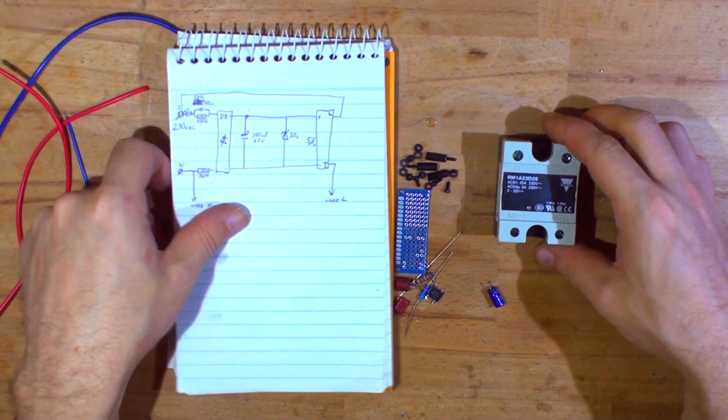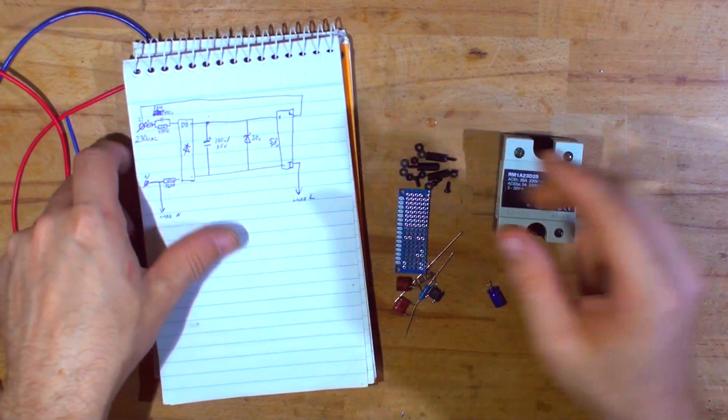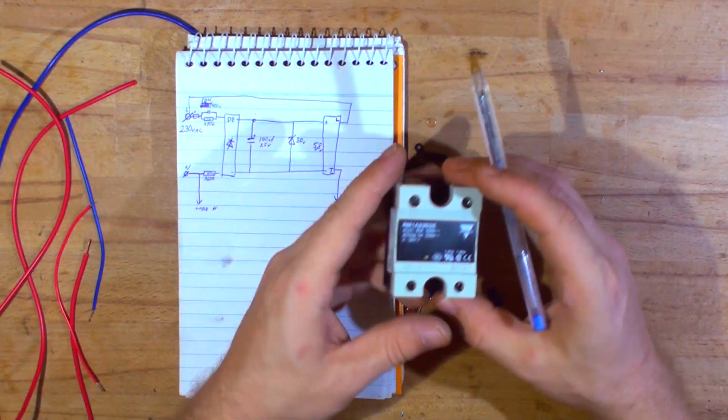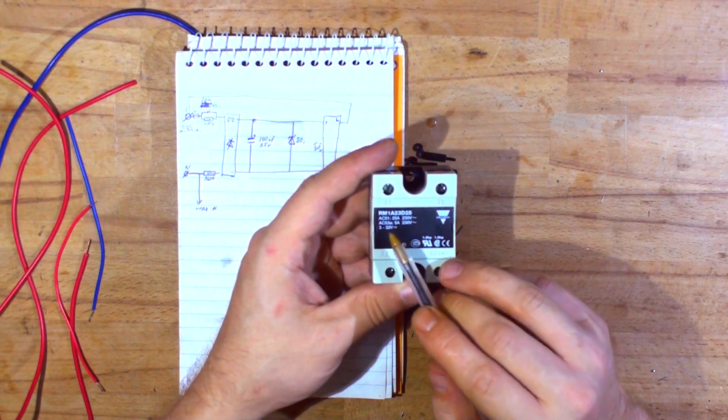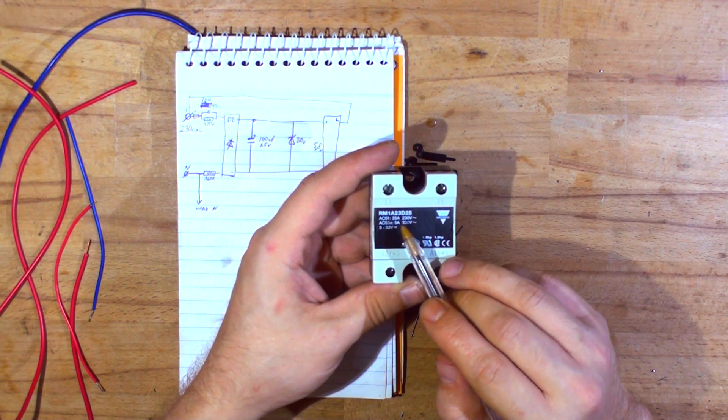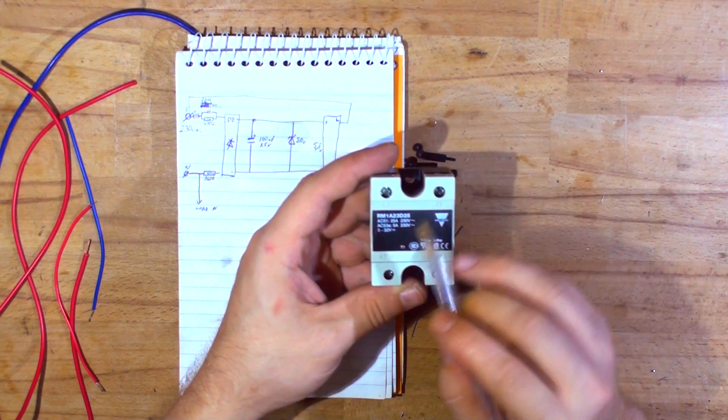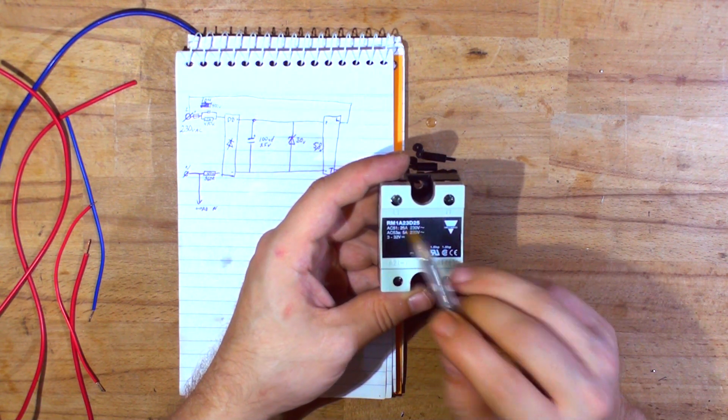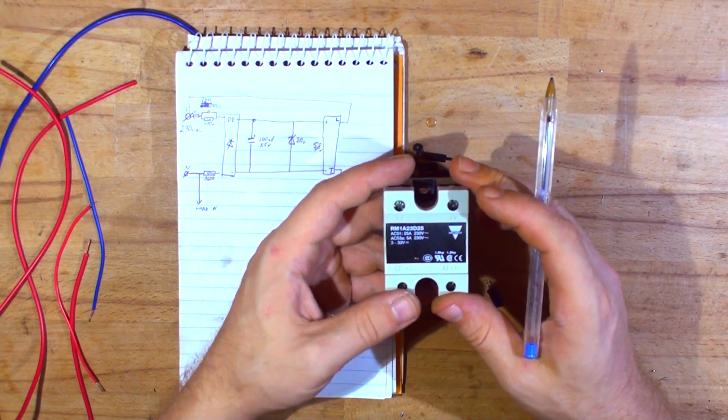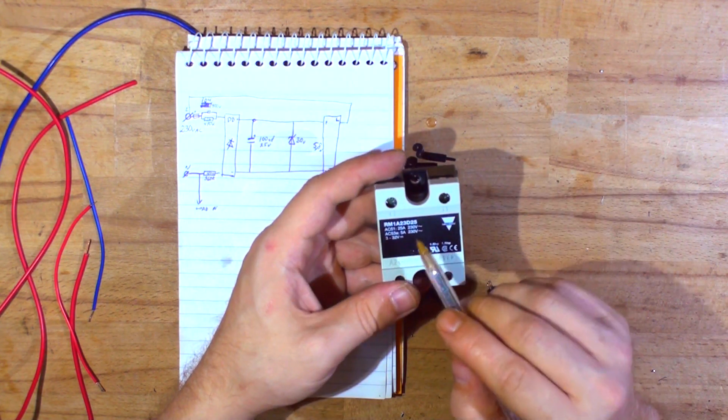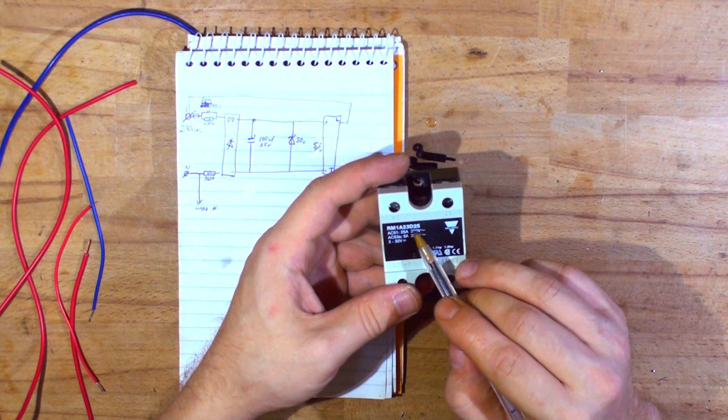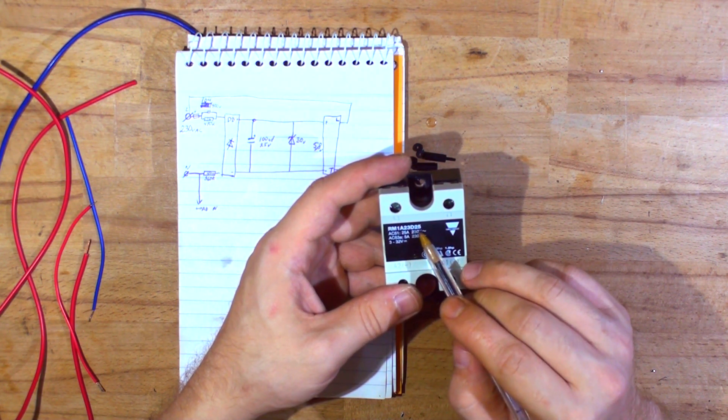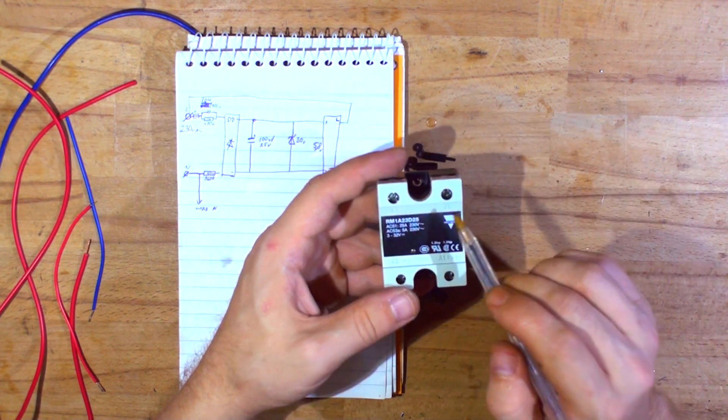The design uses these relays - some of them turn on at the zero crossing and some at random. That letter A means it's going to turn on at zero crossing, the B one is usually random. So this is a single phase 230 volts, the D means it's 3 to 32, and 25 is amps.